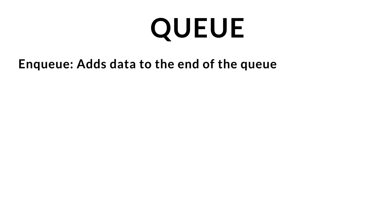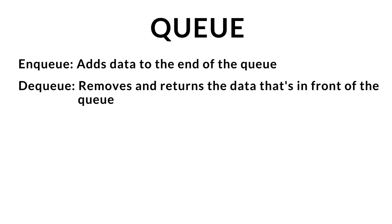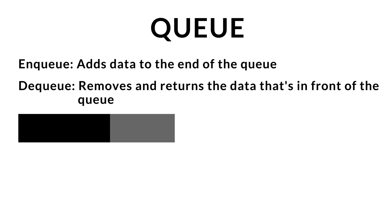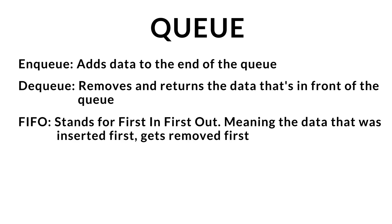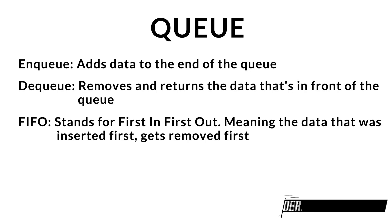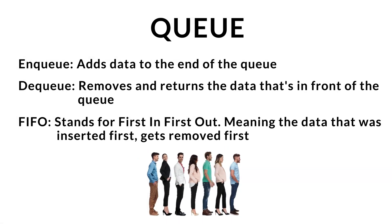A queue has two main methods: a method called NQ, which adds the data to the back of the queue, and a DQ method, which removes and returns the data inserted at the front of the queue. This follows the principles of FIFO, which stands for first in, first out, meaning the data that was first inserted within the queue is the first to get removed. An analogy often used when talking about a queue is a line at a grocery store — the person who is first in line is the person who is first served.